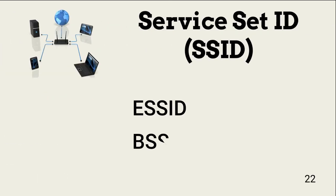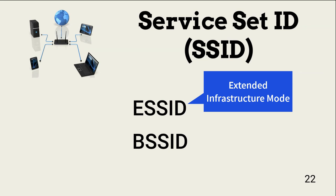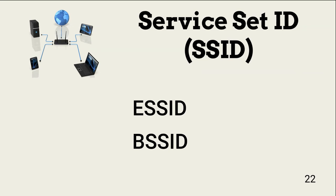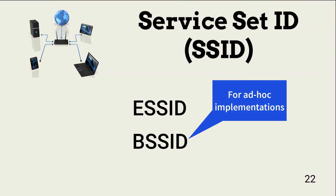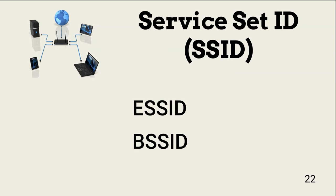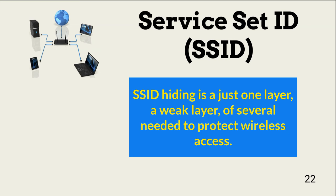Service set identifiers, or SSIDs, provide each wireless network with a name, making it easier for users to find and connect to resources. There are two types: ESSID, which enables wide-area movement of devices without service interruption, used in the Extended infrastructure mode; and BSSID, or Basic SSID, used when the access point is implemented in ad hoc or peer-to-peer modes. It is considered security best practice to hide the SSID by configuring access points not to broadcast the SSID beacon frame, requiring the user to know the SSID in order to connect. However, SSID hiding is not strong security — threat actors can easily capture the SSID with sniffers.